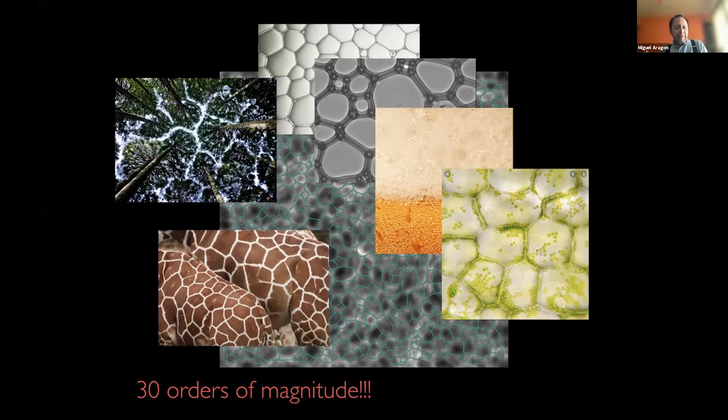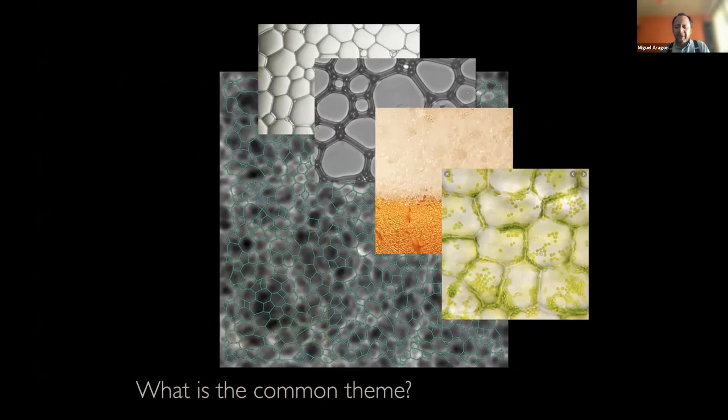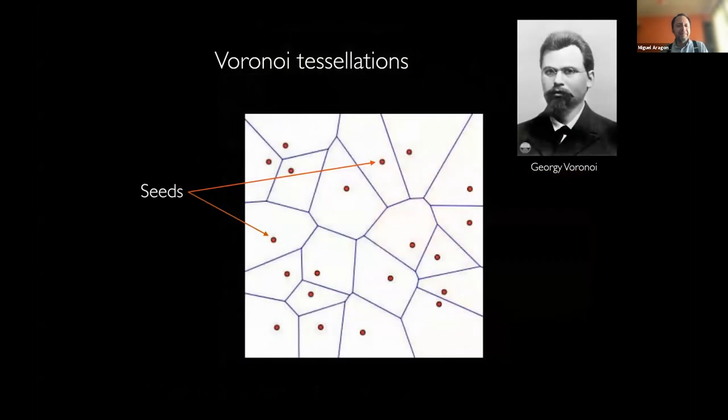Now there are 30 orders of magnitude between these processes. What is the common factor between them? What is the common theme? Well, the common theme is that these are Voronoi tessellations. And how do you make a Voronoi tessellation? You make the Voronoi tessellation by starting with some seeds, and then you let these seeds grow. And as they grow, when they touch, you start forming boundaries. And that's how you end up with this space partition.